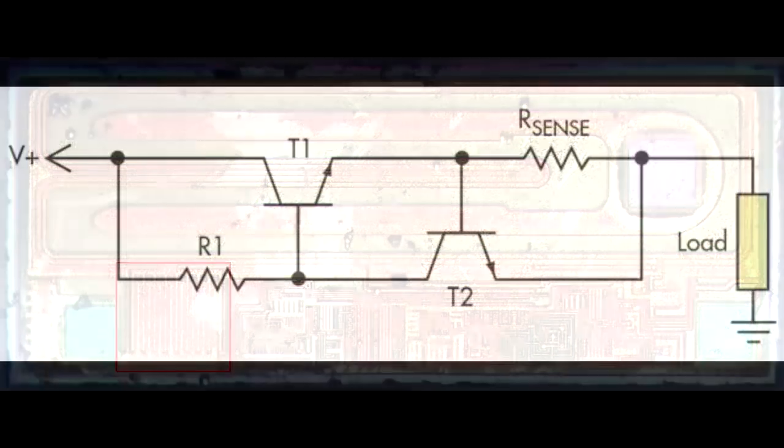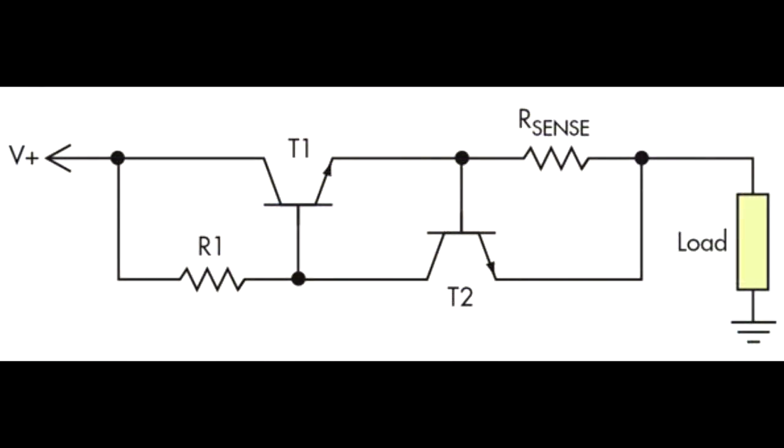On the pad I've marked R external there is an ESD protection diode to the left and there's a transistor to the right. Now if I open up a classic circuit for current limiting you get this kind of two transistor topology and I think that this is similar to what we're looking at in this silicon die.